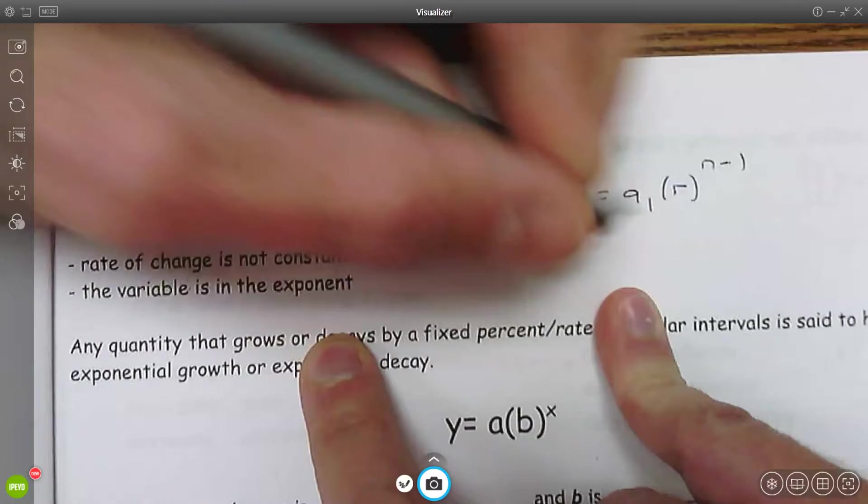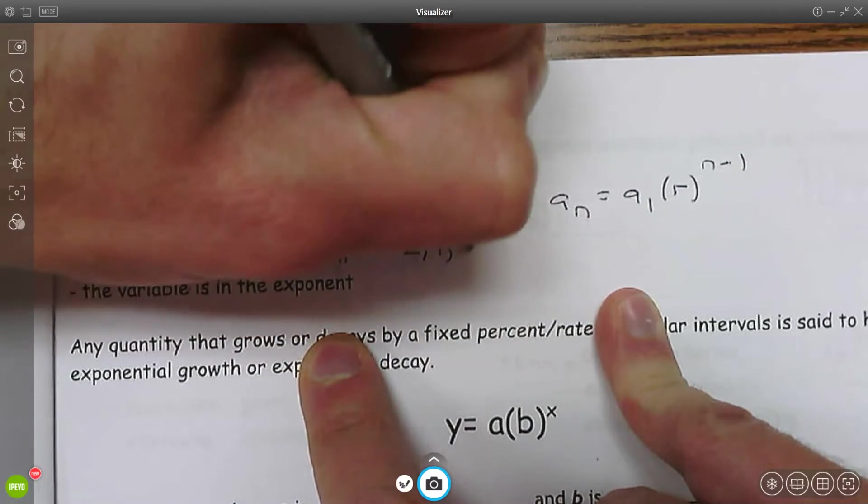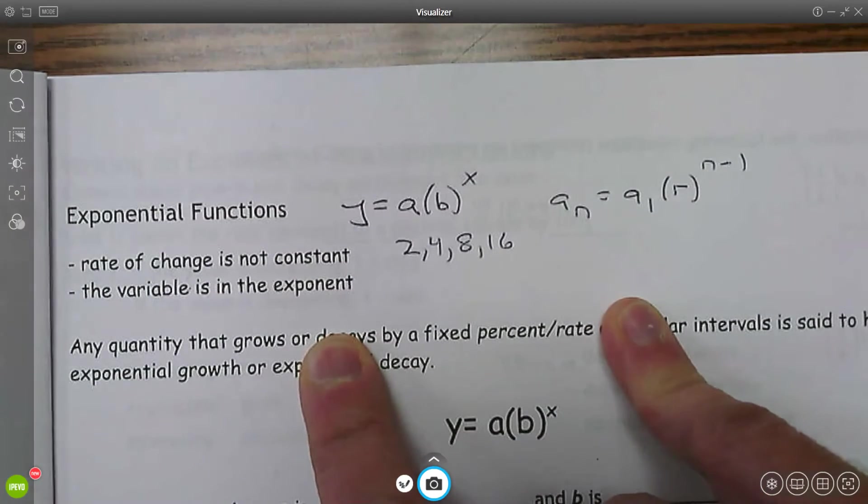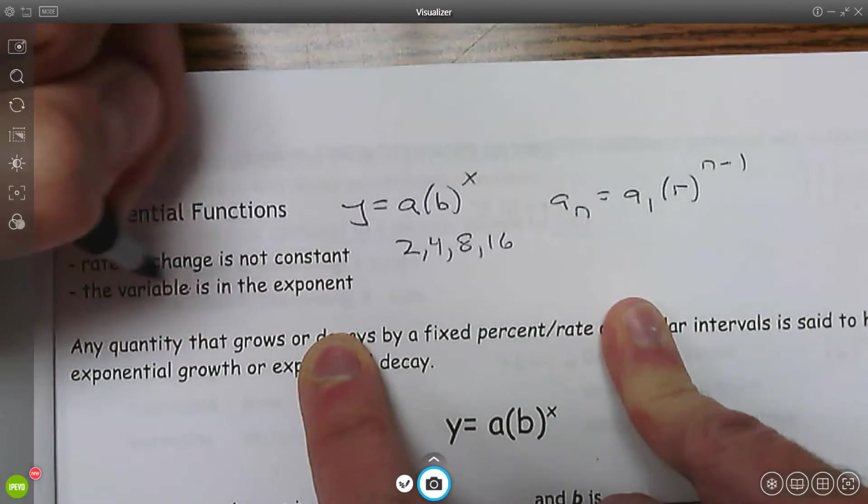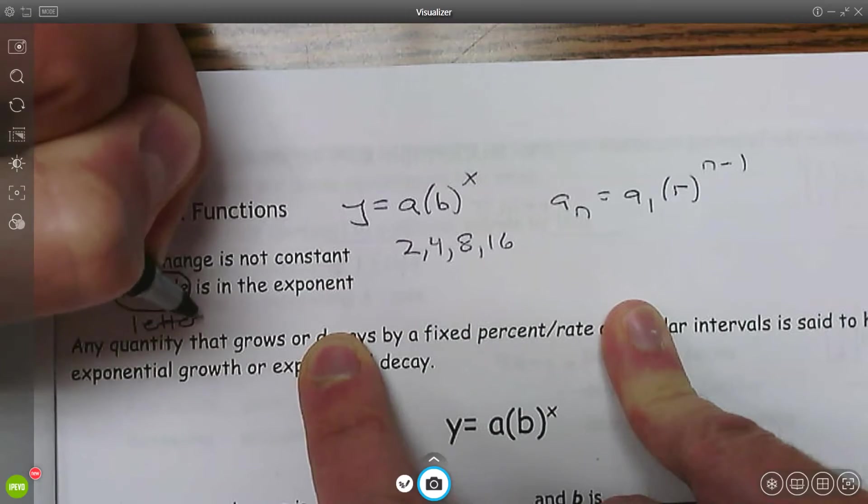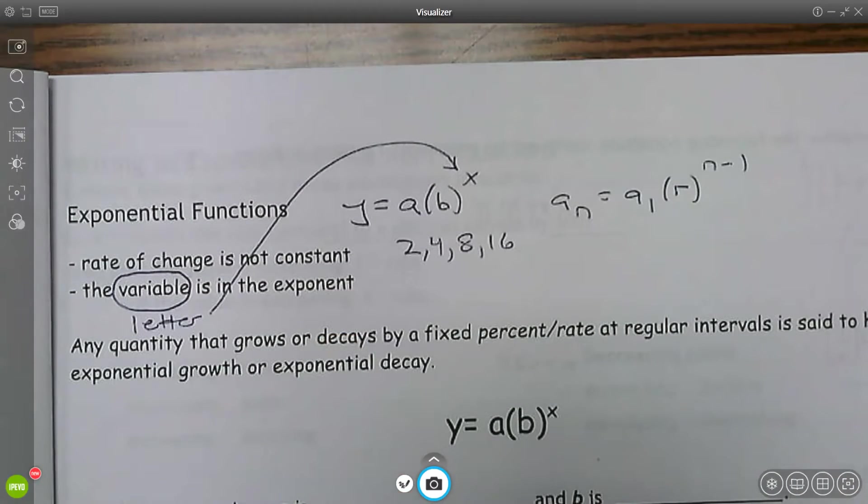So if I keep multiplying by two, this goes up by two, this goes up by four, this goes up by eight. That's not constant. The variable is in the exponent. So the letter x is in the exponent. That's what makes us exponential.